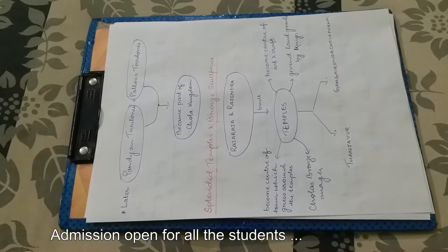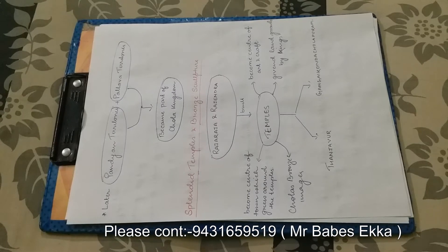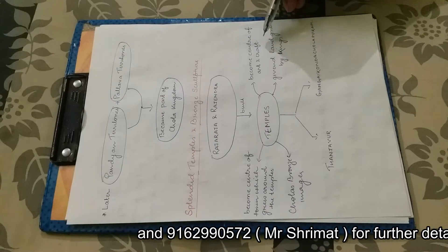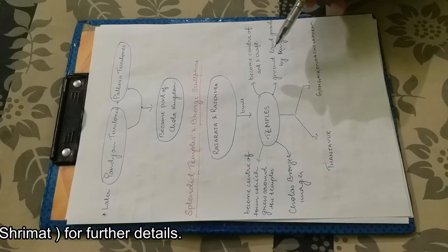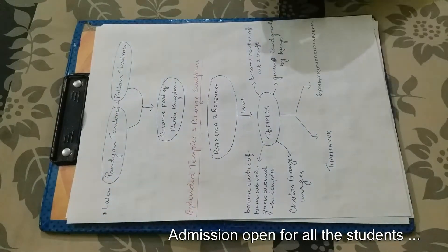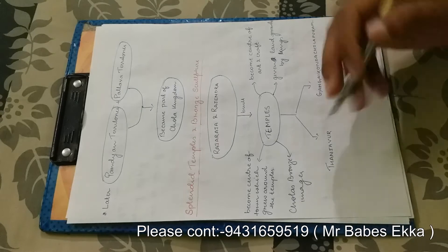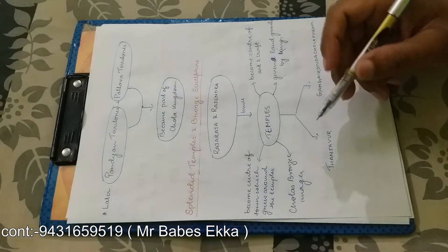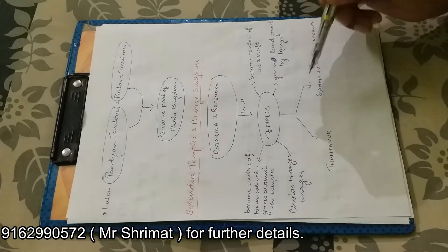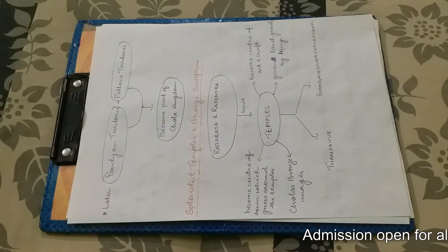Now they built splendid temples and bronze sculptures. Who were the important rulers? Raja Raja and Rajendra Chola. They built temples. The temples became the center of art and craft and the temples were given land grants by king. The temples became the center of town which grew around the temples. And the Chola bronze image is very famous and it is world famous. The temples were built in Thanjavur and Gangai Konda Cholapuram.